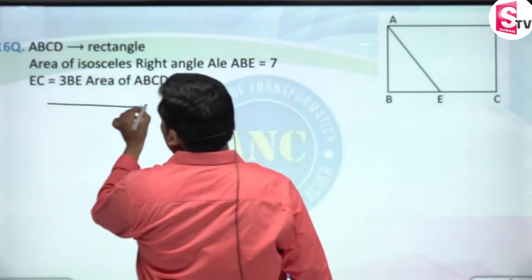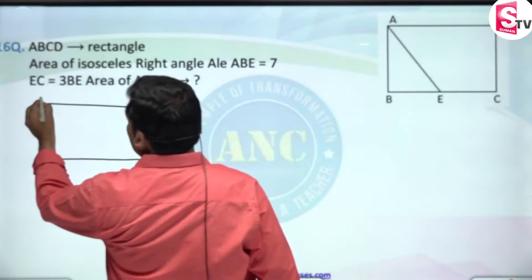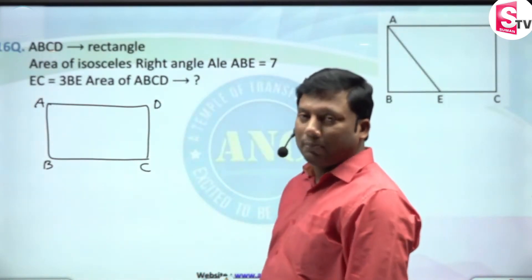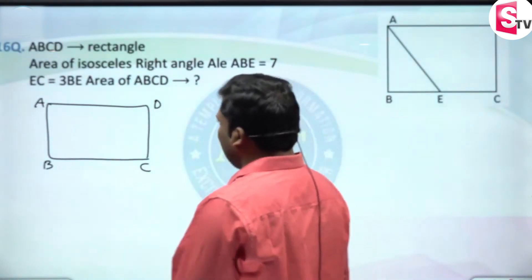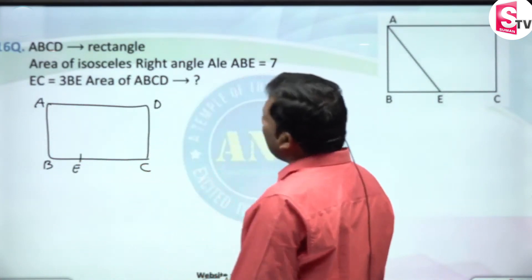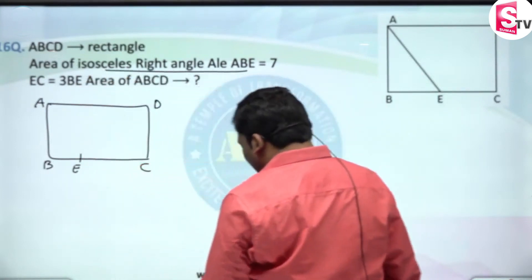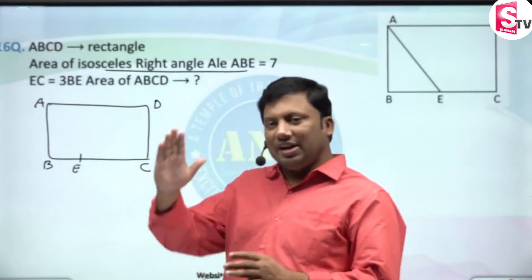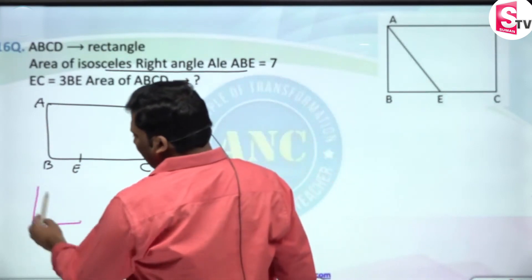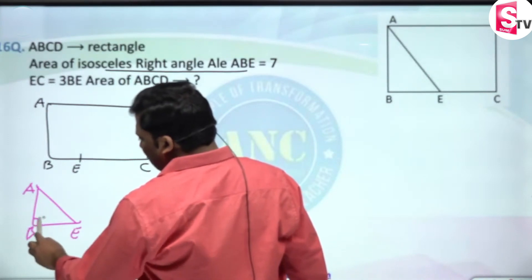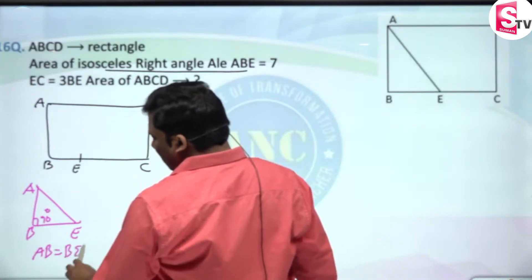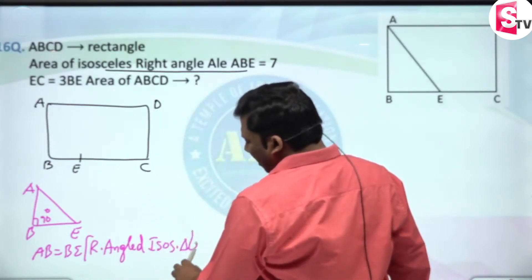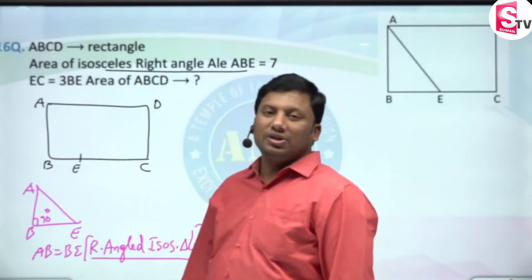ABCD is a rectangle. There is a very important property with respect to rectangle. Point BE forms an isosceles right-angled triangle. A right-angled triangle is one in which one angle is 90 degrees. An isosceles right-angled triangle means other than the hypotenuse, the other two sides are equal — so AB is equivalent to BE. That is called a right-angled isosceles triangle.